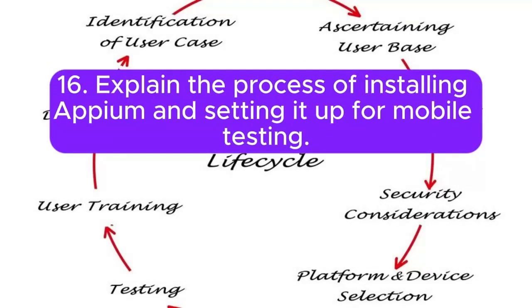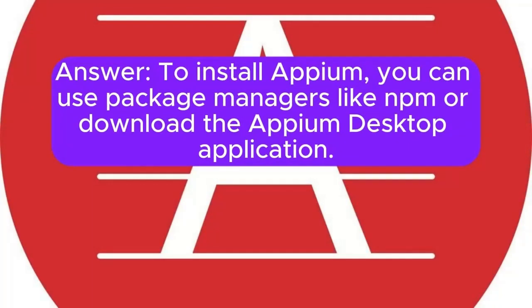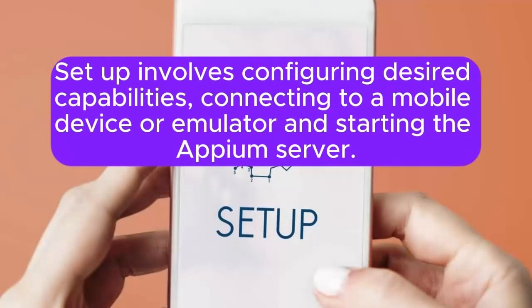16. Explain the process of installing Appium and setting it up for mobile testing. To install Appium, you can use package managers like NPM or download the Appium Desktop application. Setup involves configuring desired capabilities, connecting to a mobile device or emulator, and starting the Appium server.